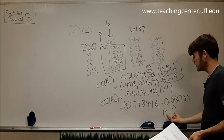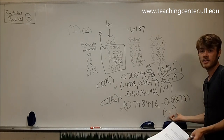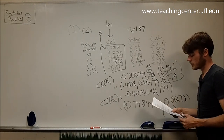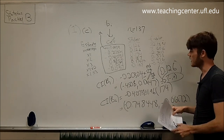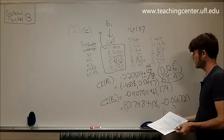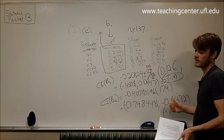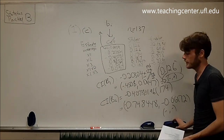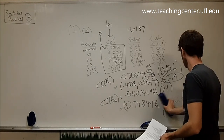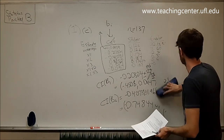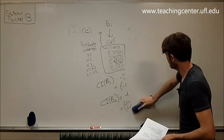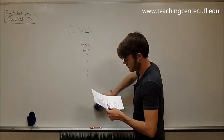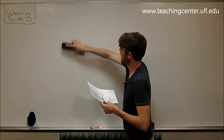For beta 2, we have negative 0.40731 plus or minus 1.96 times the standard error of 0.174. This interval is negative to negative — it doesn't include 0. So it supports our conclusion that beta 2 is not 0. And that's the end of question 1.